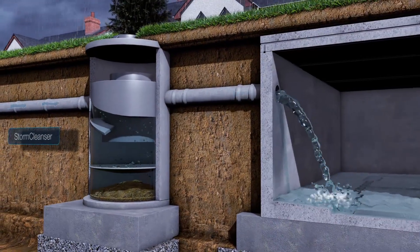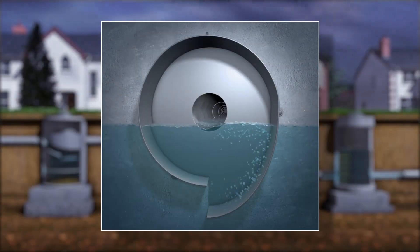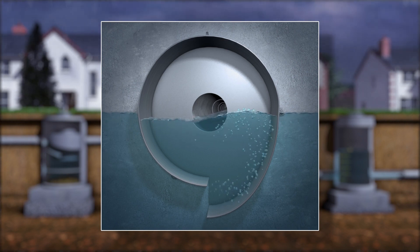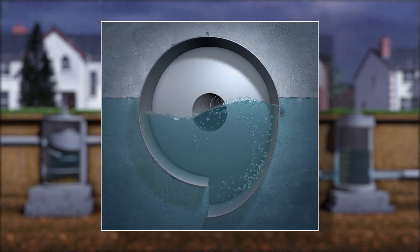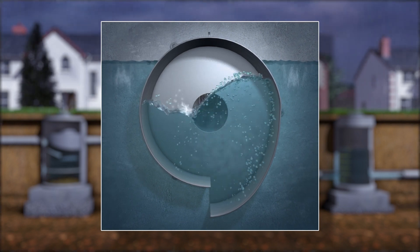The water head upstream of the stormbreak increases as the storm progresses. Water enters the stormbreak tangentially and rises up the circumference of the device, but lacks sufficient energy for full rotation and vortex formation.